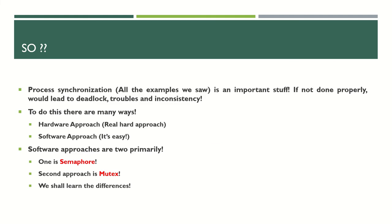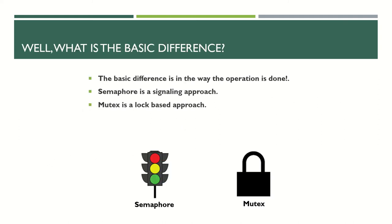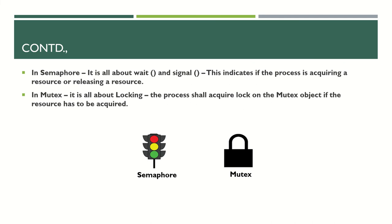This is all process synchronization. There are two types of approaches in operating systems: hardware-based, which is tough and less familiar to most, and software-based. One software approach is semaphore, another is mutex. The basic difference is that semaphore is a signaling approach and mutex is a locking approach. Semaphore is a signal; mutex is a lock.